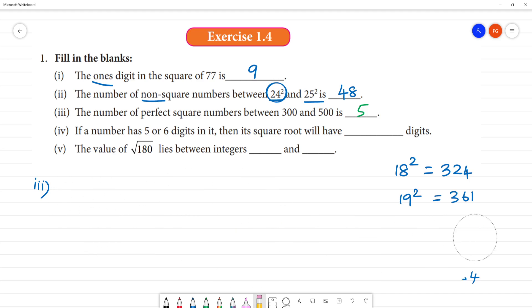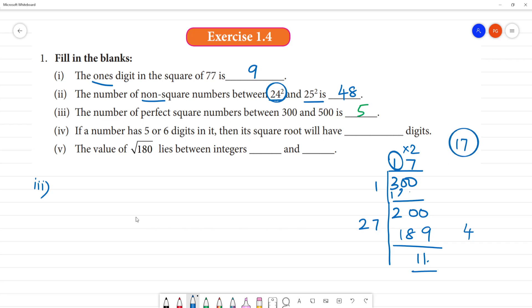We can use long division to find square root. For 300, using long division: take 3, 1 times 1 is 1, subtract to get remainder 2. Bring down 00. Multiply by 2 to get 2. Then we try 7: 27 times 7 is 189, which gives us 11 as remainder. So 17 squared is less than 300. Therefore 18 squared is greater than 300.